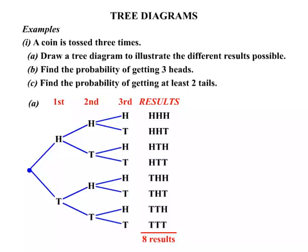Now we can start answering some questions. We need to find the probability of getting three heads. Well, the probability of head, head, head. Let's have a look. It only occurs once. Only occurs once out of eight. So the probability is one out of eight.